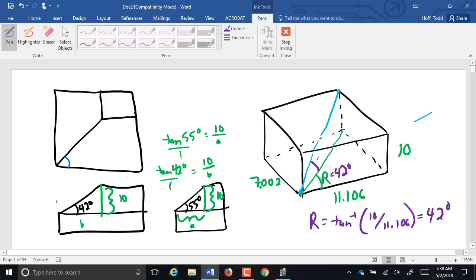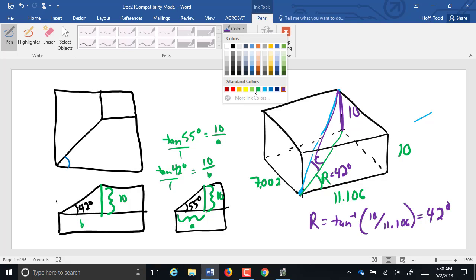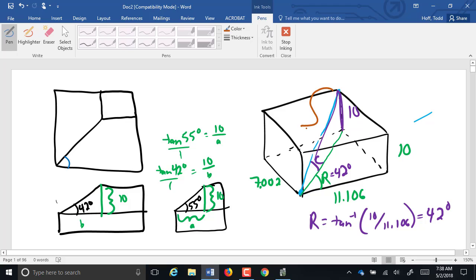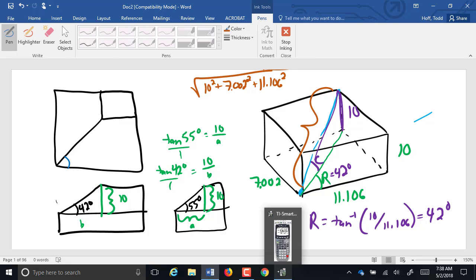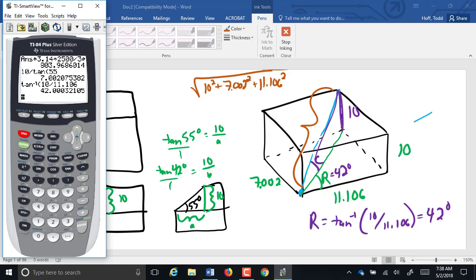Now to find C here, we have this as 10. We need to know the length here, so we'll do the square root of 10 squared plus 7.002 squared.